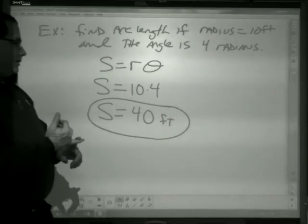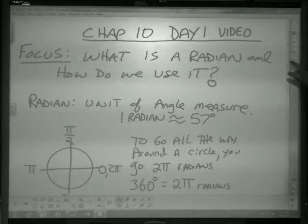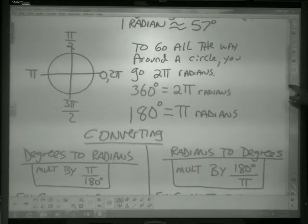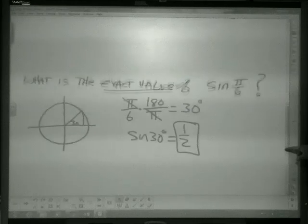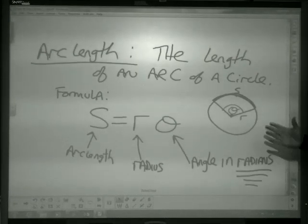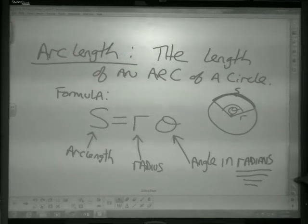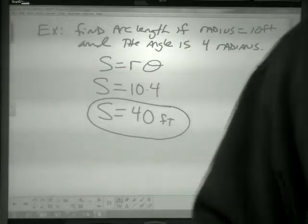A radian is just another unit of measure. Instead of degrees, we measure in radians. We can convert degrees to radians, radians to degrees. We can find exact values with radians, and we can find the length of an arc with radians. That's it.